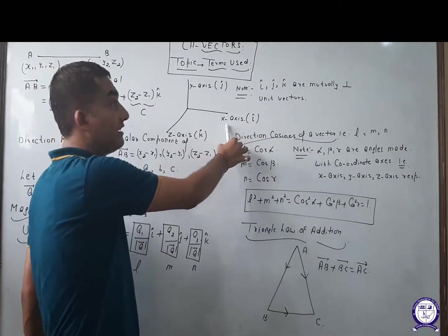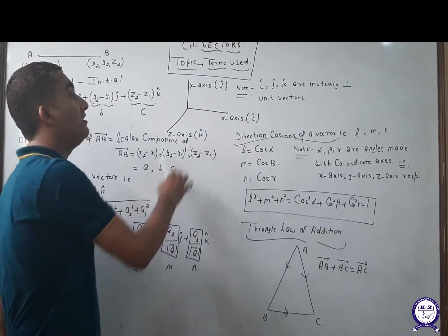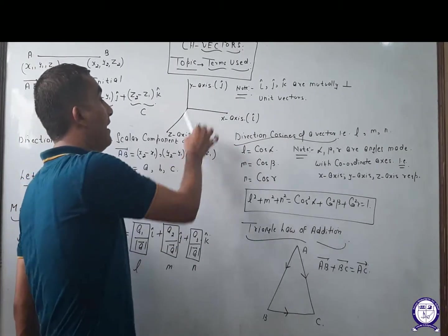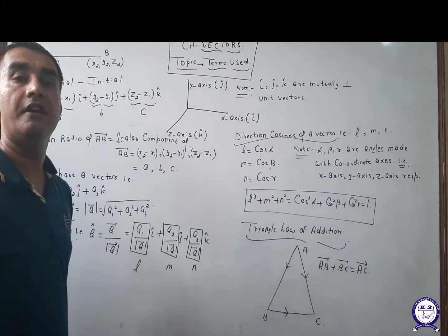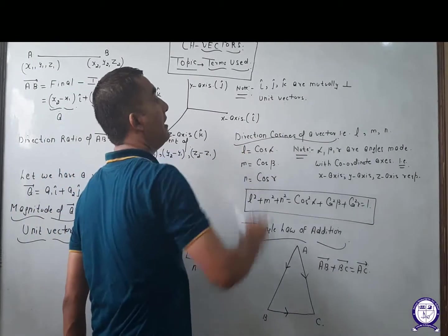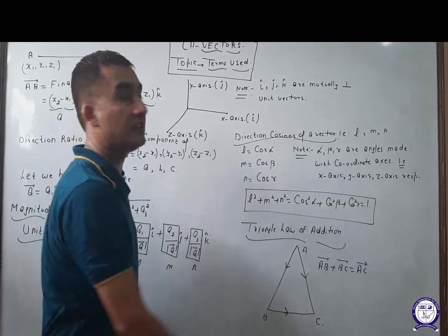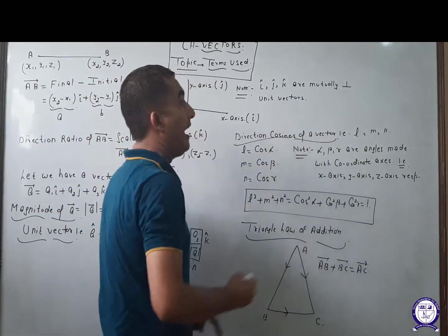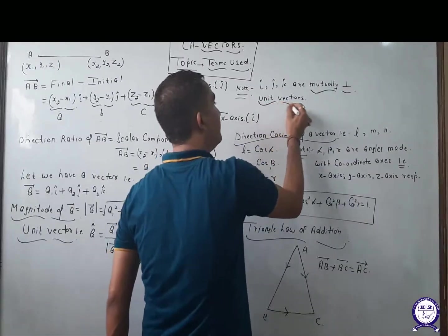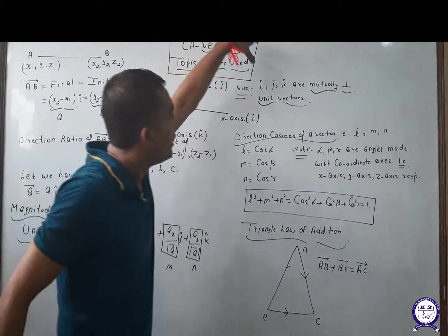In vectors, i-cap is with the x-axis, j-cap is with the y-axis, and k-cap is with the z-axis. Just as x-axis, y-axis, and z-axis are perpendicular to each other, i-cap, j-cap, and k-cap represent your x, y, and z axes and are mutually perpendicular as well as unit vectors.